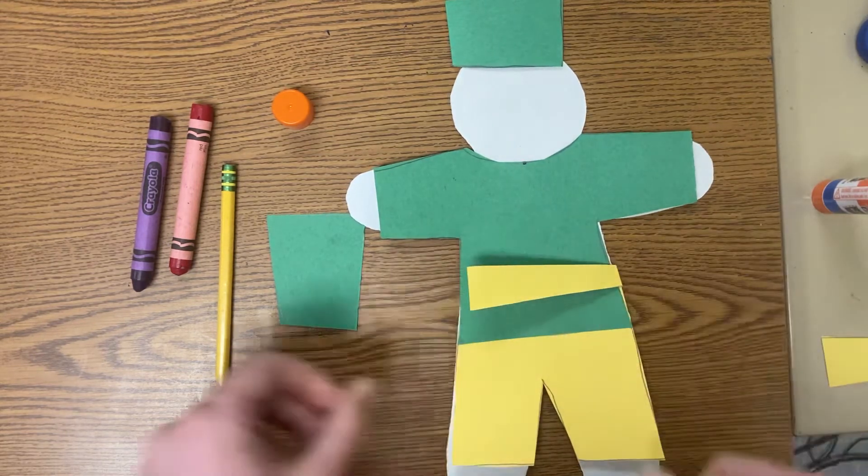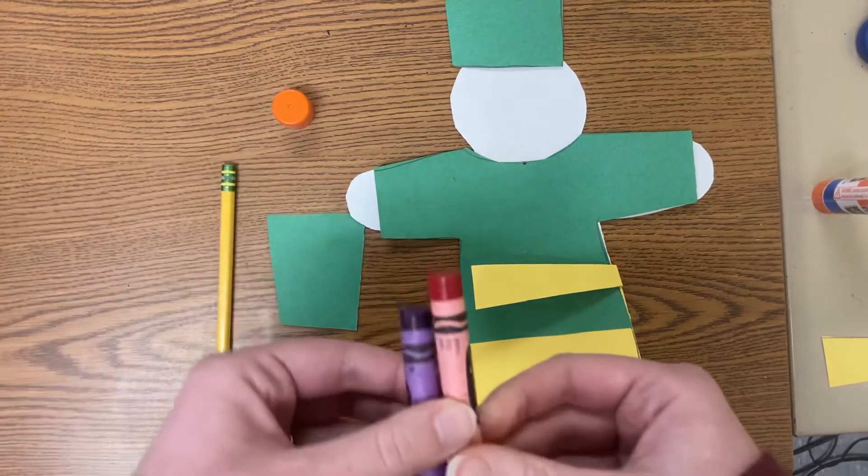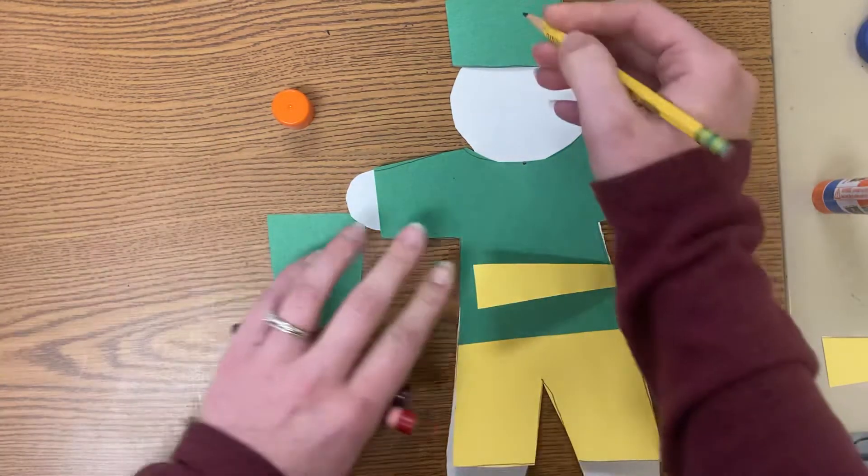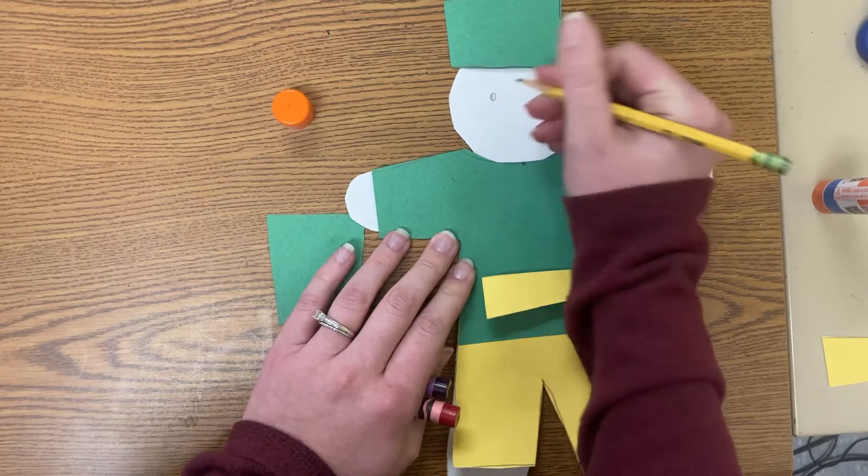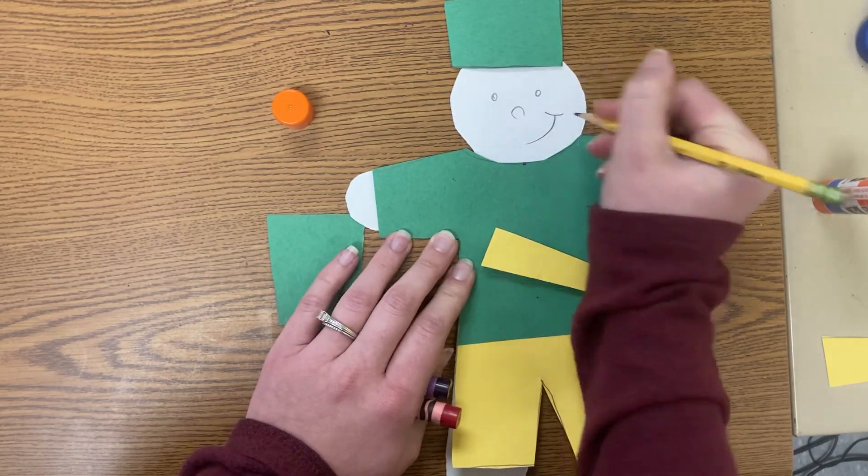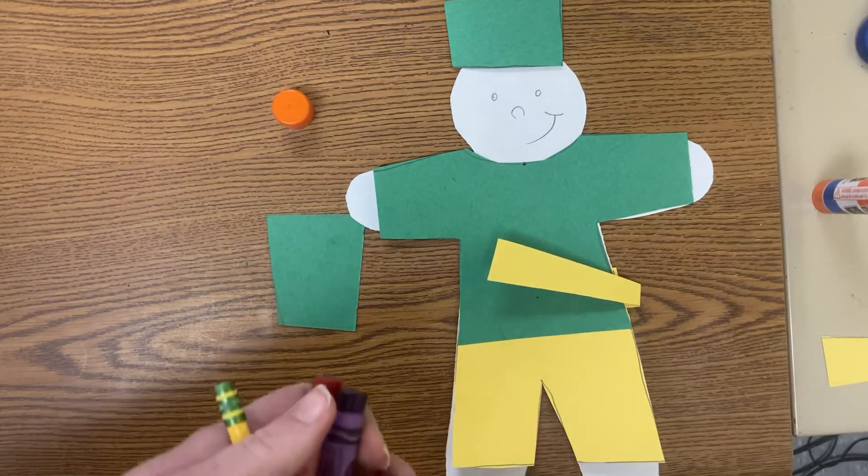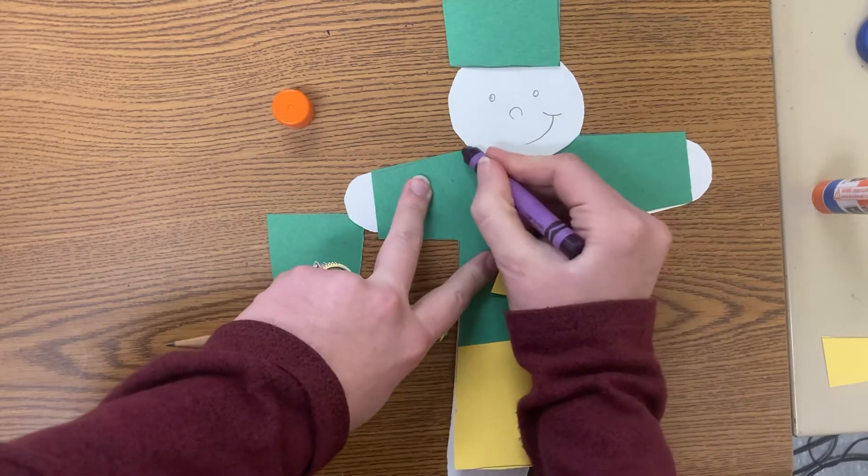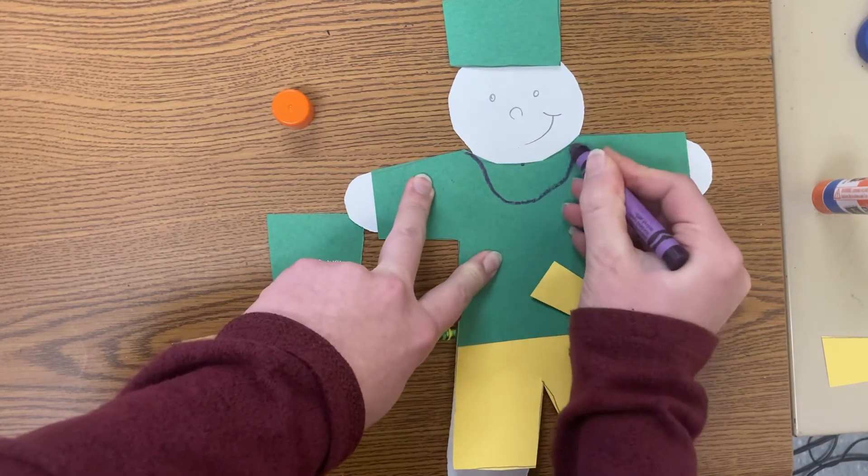You can also use your pencil or crayons to create things like a face. So maybe my person is happy or sad, just a nice face. And I could also take these to draw things, maybe I want a necklace on my person.